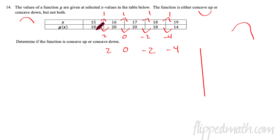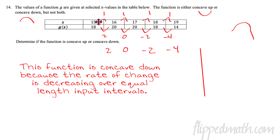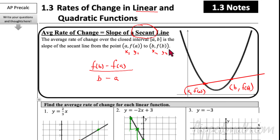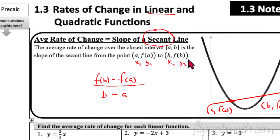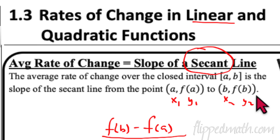If the average rate of change is decreasing, the function is concave down. If it's increasing, it's concave up. So the function is concave down because the rate of change is decreasing over equal-length input intervals. That's it — good luck on 1.3. This is Mr. Kelly: remember, it's nice to be important, but it's more important to be nice.